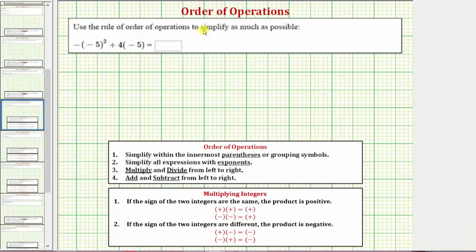We want to use the order of operations to simplify the expression. The directions may also say evaluate the expression. We have negative or the opposite of the square of negative five plus four times negative five.